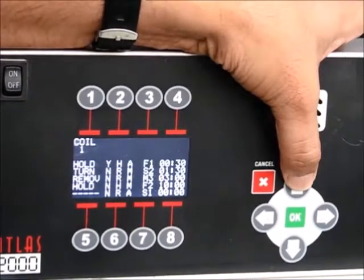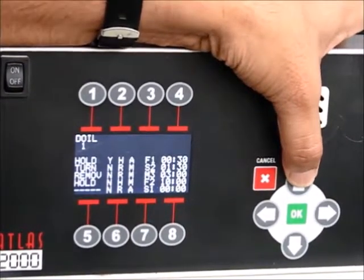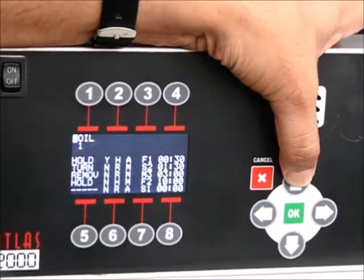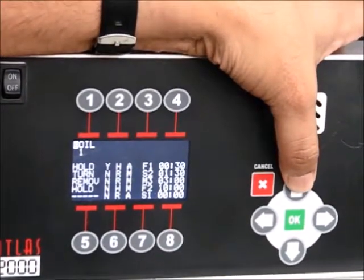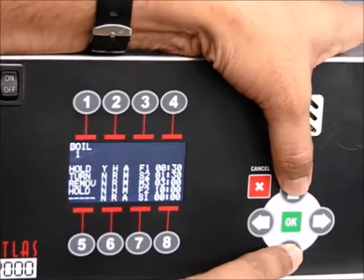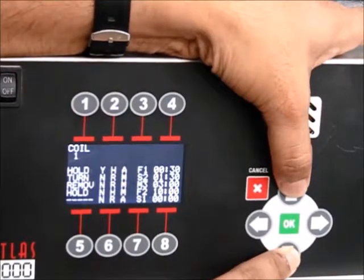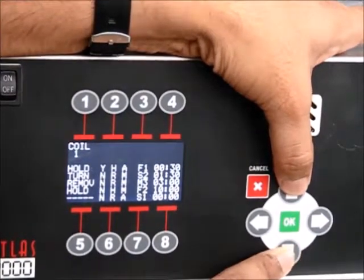To change characters, press the up or down arrow. For a blank space, scroll before 0. Press the left or right arrow to move to the next character. Press OK to complete the changes on each line.